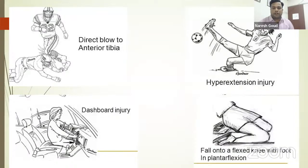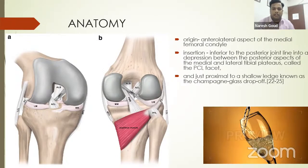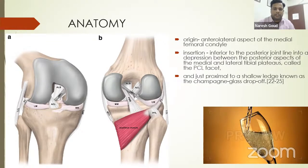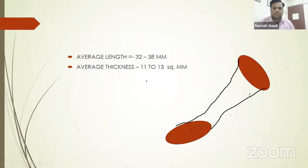Injury can also happen because of a fall onto a flexed knee with the foot in plantar flexion. The PCL is an intra-articular but extra-synovial ligament. It starts on the anterolateral aspect of the medial femoral condyle, goes distally and laterally, and inserts onto the inferior part of the posterior joint line on a depression between the two posterior tibial eminences — a trapezoidal-shaped facet called the PCL facet. The end of the PCL facet is called the champagne glass drop-off point. PCL length averages 32 to 38 mm with thickness of 11 to 13 square mm.